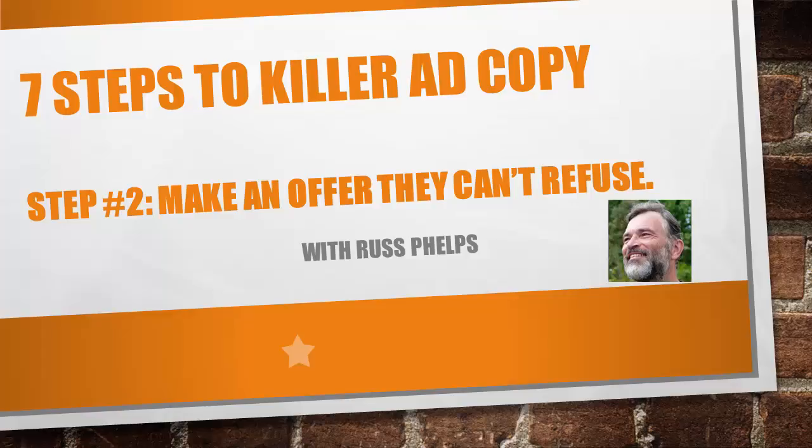The second point is you have to make an offer they can't refuse. An offer is a statement of what you're offering to the buyer in exchange for what you want from them, which in most cases is their money — the sale. It has a number of components: the price, the terms, the delivery, and your guarantee. In my ebook 'Seven Steps to Killer Ad Copy,' I say: ask yourself what's the biggest promise you can make to your customer that you know you can fulfill, and what's the most you can offer for the price you're asking without hurting yourself.